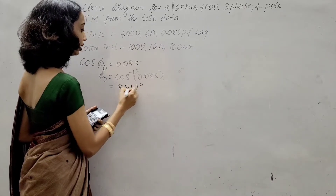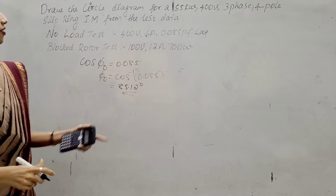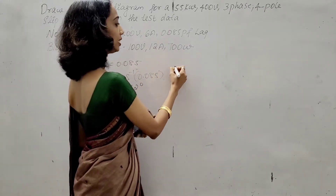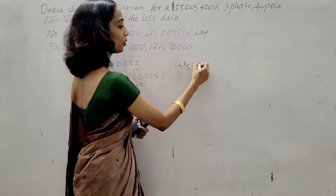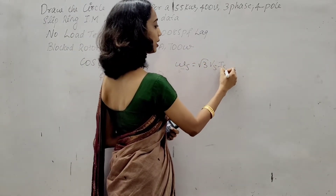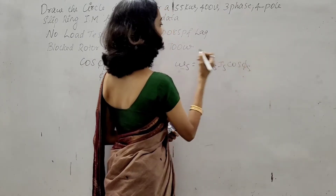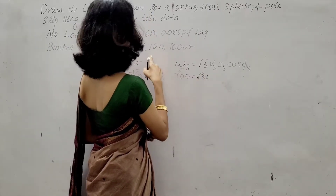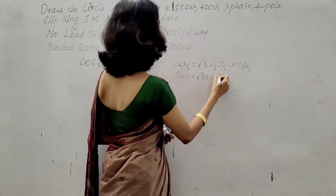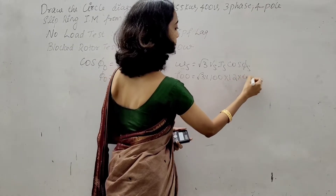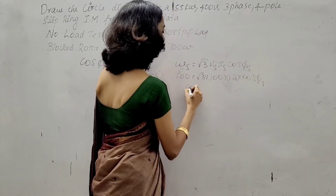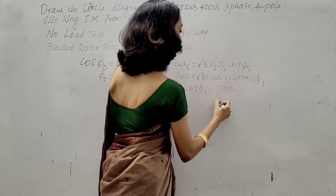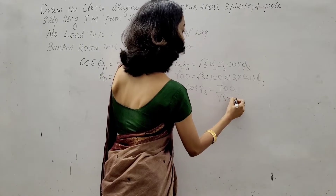φ₀ is 85.12 degrees. For the block rotor test, the equation is: WS = √3 × VS × IS × cos φS. WS = 700 = √3 × 100 × 12 × cos φS. Therefore cos φS = 700 divided by (√3 × 100 × 12).